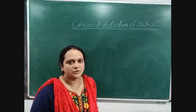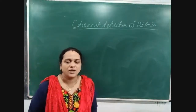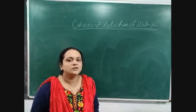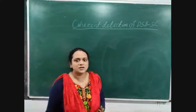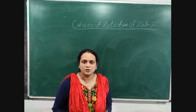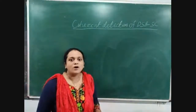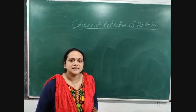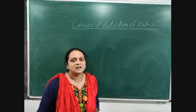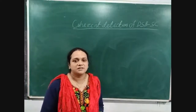Good morning students. Today we are going to learn coherent detection of DSB-AC. In the last two classes we have discussed about the modulation process of DSB-AC, and today we discuss about the demodulation process. Demodulation is the process used to recover the original signal from the modulated signal. Coherent means synchronous detection — in synchronous detection, the carrier signal used in the transmitter section and the carrier signal used in the receiver section are same in phase and frequency.